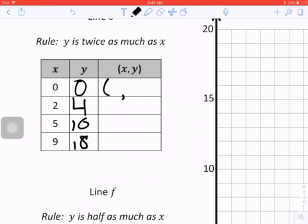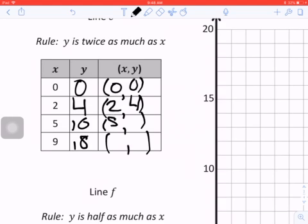Going to go ahead and build up my coordinate pairs, which are (0,0), (2,4), (5,10), (9,18). I feel like as I go my handwriting gets crazier and crazier.